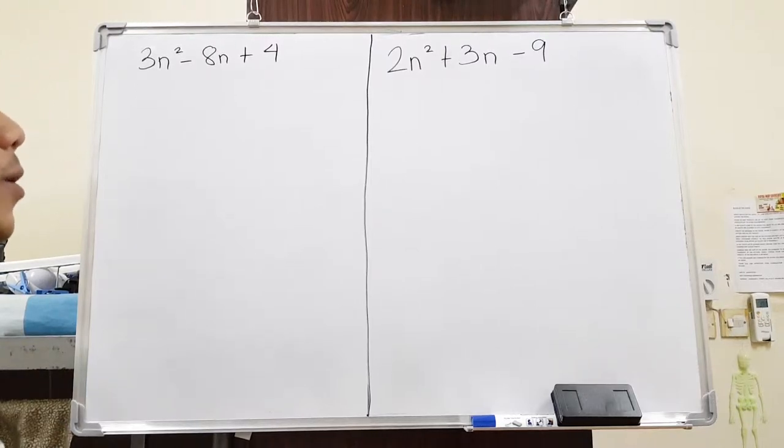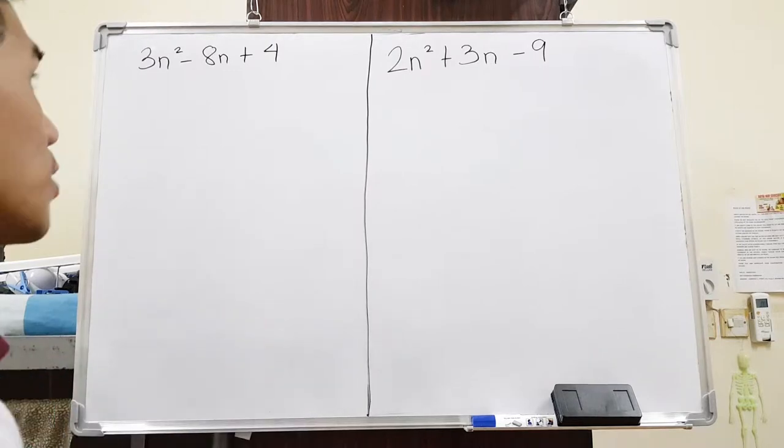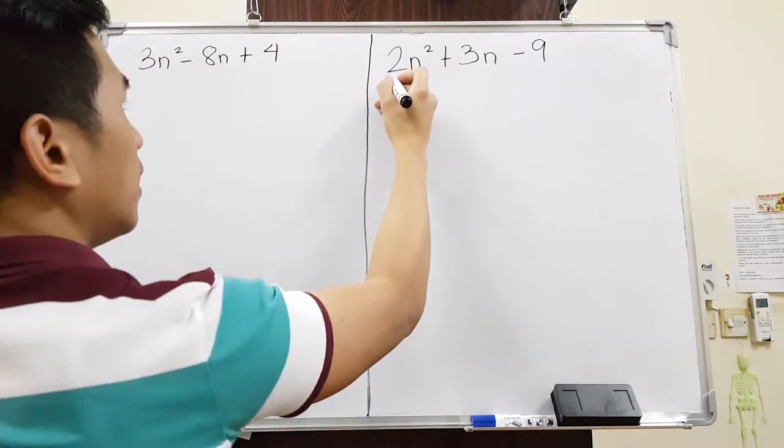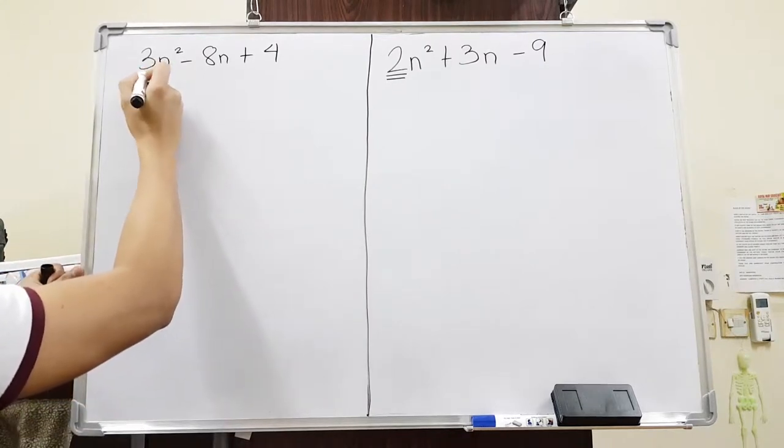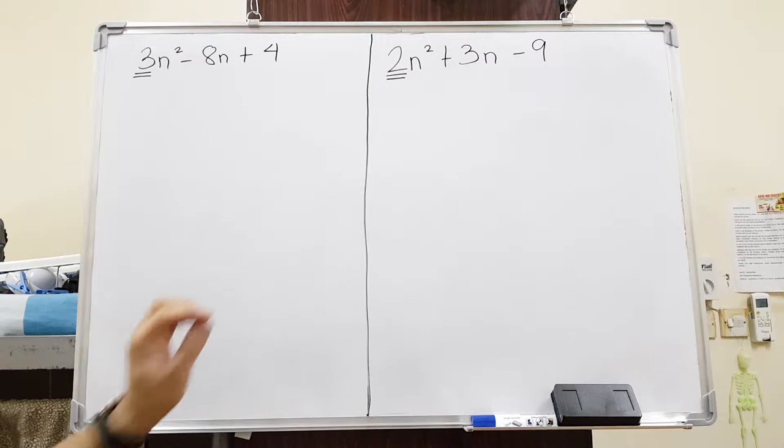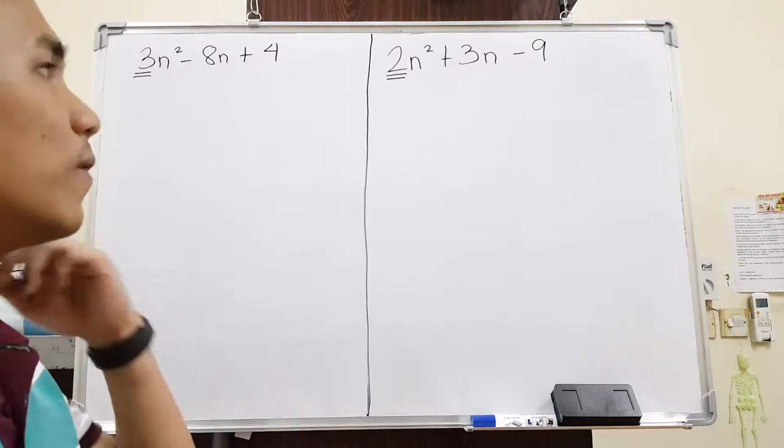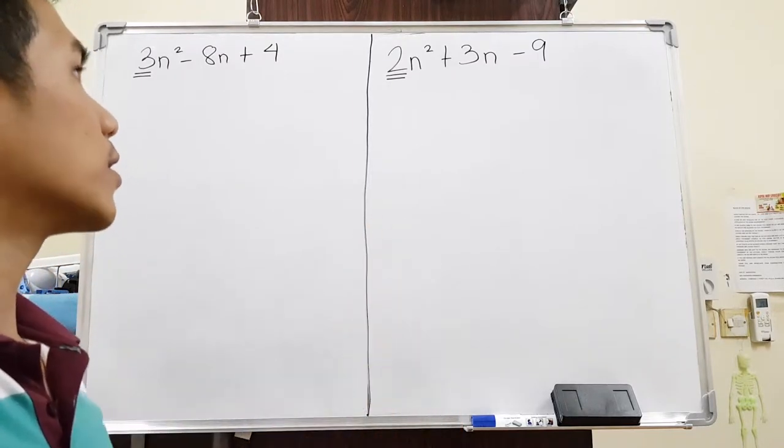We are going to factor out quadratic trinomial when a is not equivalent to 1. When you say a, this is the leading coefficient. I made a video on how to factor quadratic trinomial when a is only equivalent to 1. But this time, a is not equivalent to 1. So you have to watch the previous version first, the previous topic, in order for you to better understand this one.